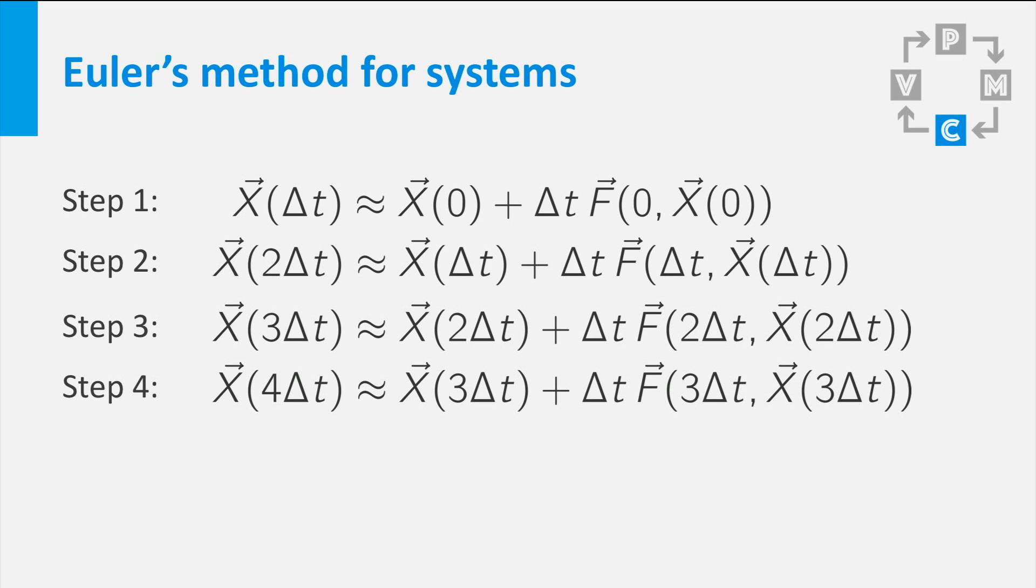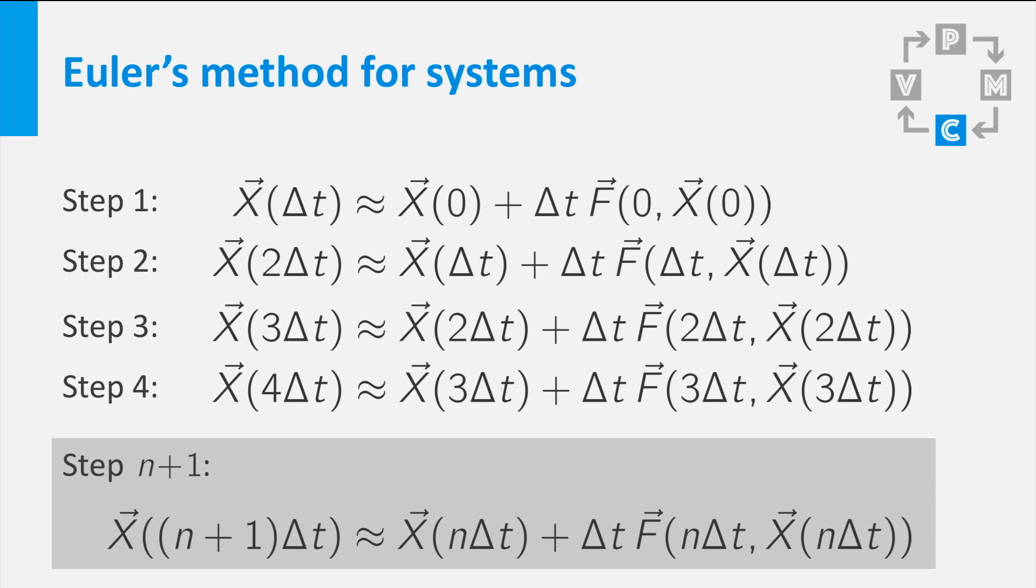You can repeat this process, which would give you the general step of Euler's method for systems. The value of x after n+1 time steps of size Δt is approximately equal to x after n steps of Δt plus Δt times the value of the right hand side function after n steps of Δt.